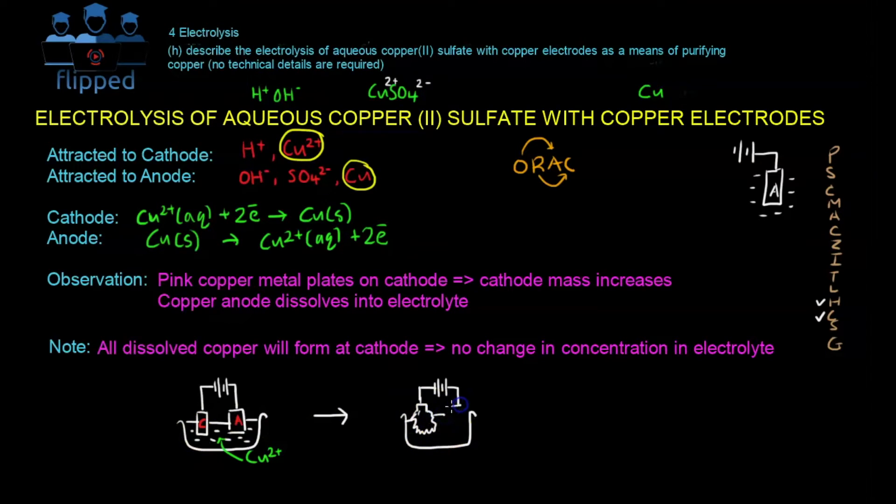Whereas the anode will be reduced to a very, very small metal, because all that is Cu solid originally is being dissolved into Cu2+ already in the solution. So this is the end of the reaction - the anode will be very small. This guy will increase in mass. Please note that all dissolved copper from the anode will form at the cathode. So there's no change in the electrolyte.